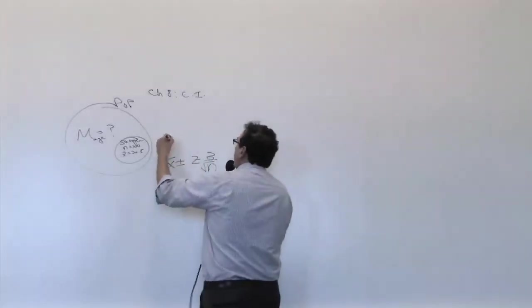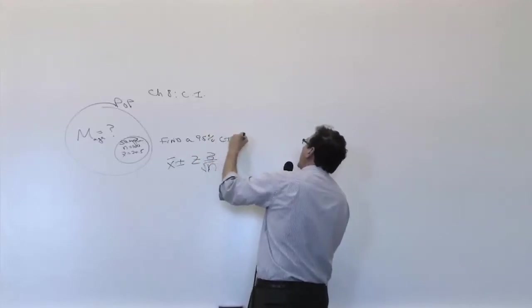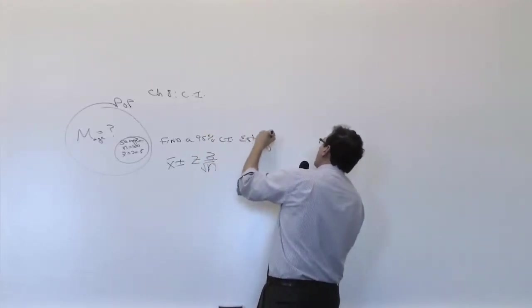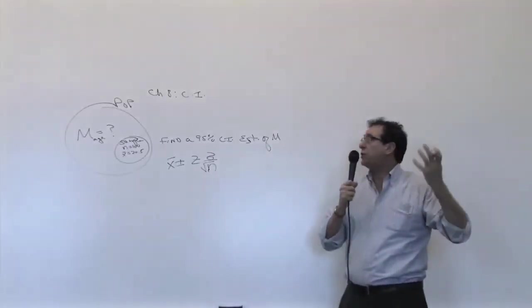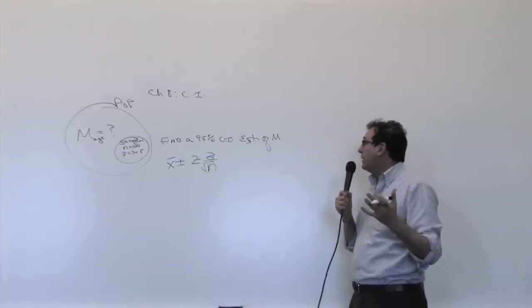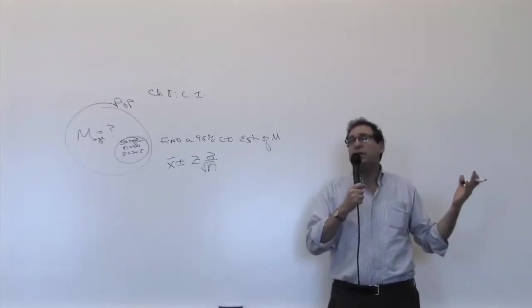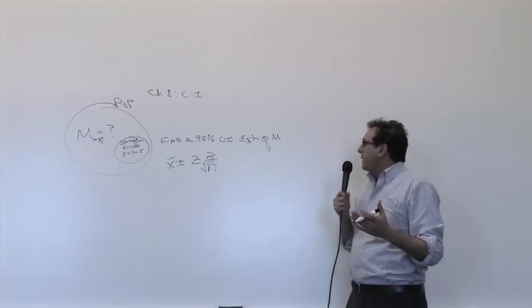Find a, let's say, find a 95% confidence interval estimate of mu. What is the average? And we're trying to really guess, what is the average of this whole population? Because that tells you something about the whole population that's quite important, like what's the average income, the average hours that you work, et cetera.